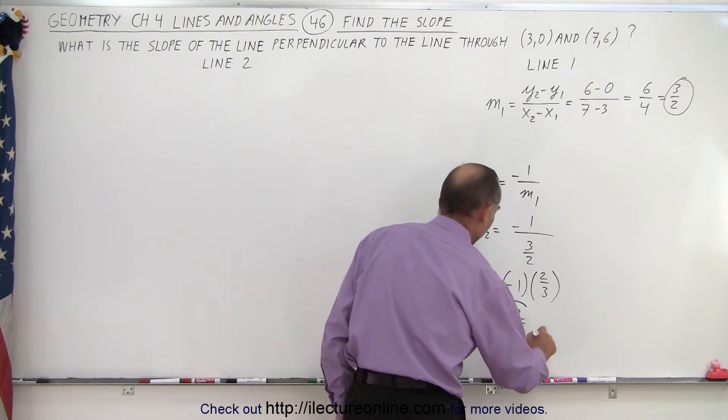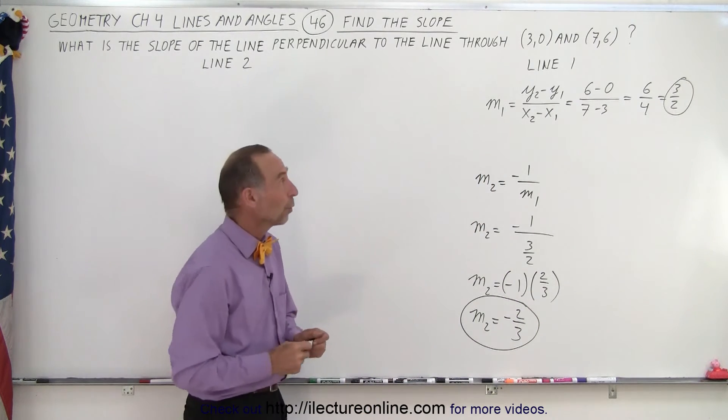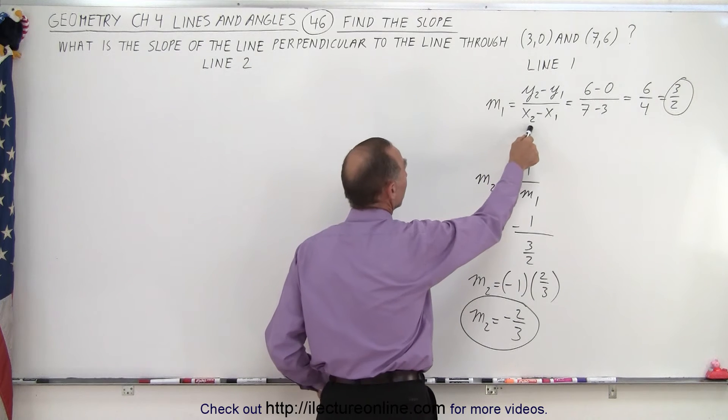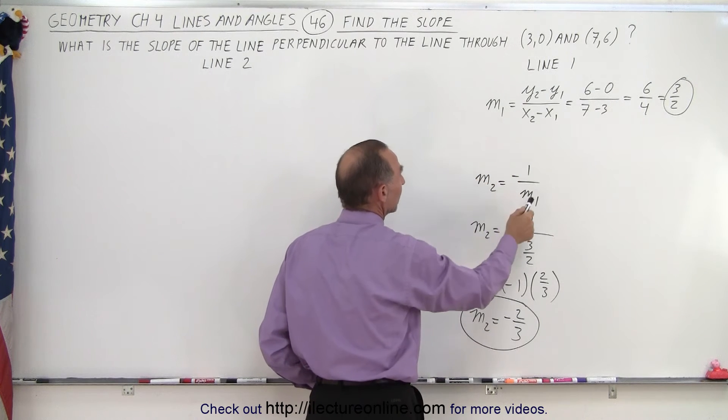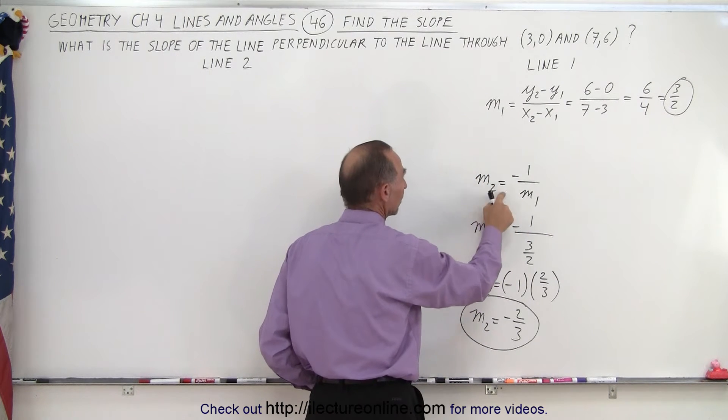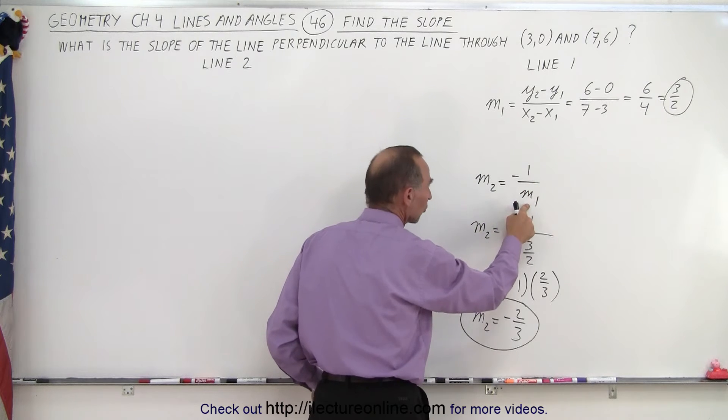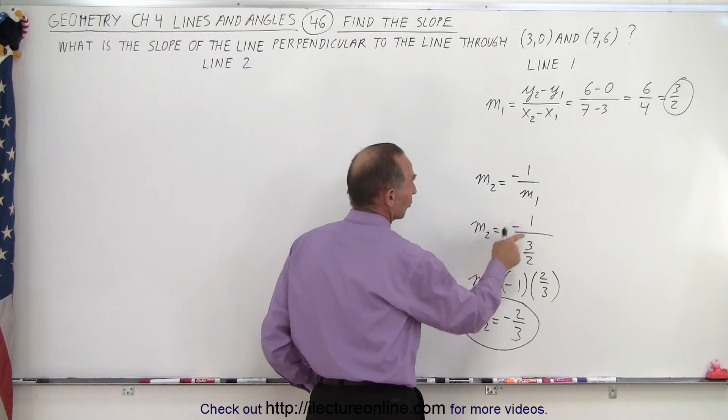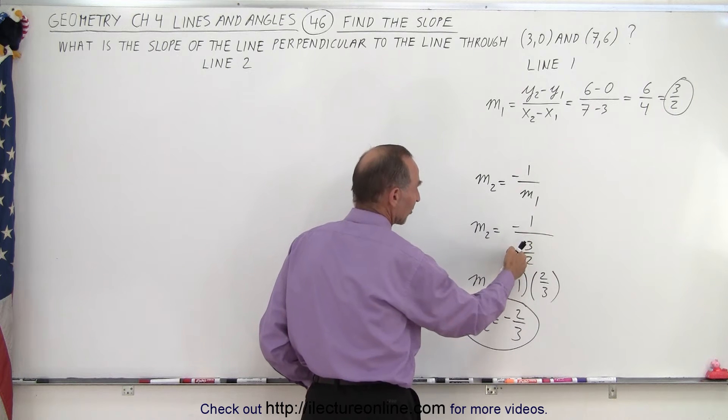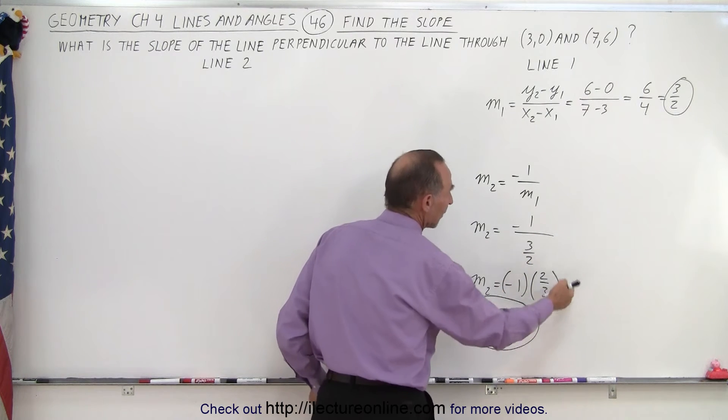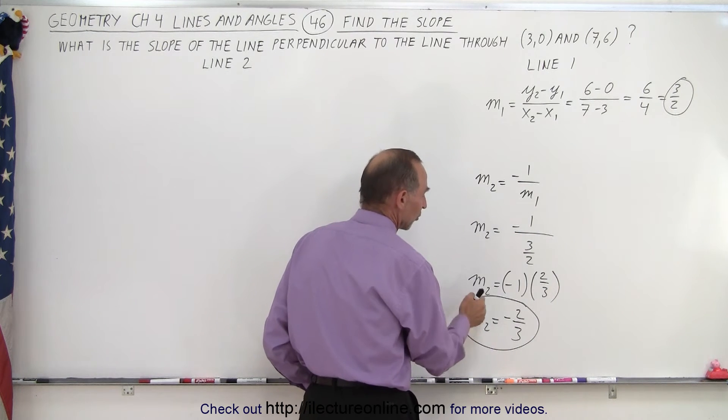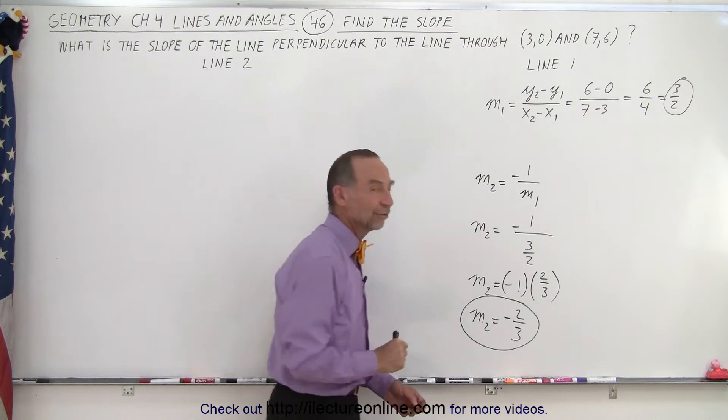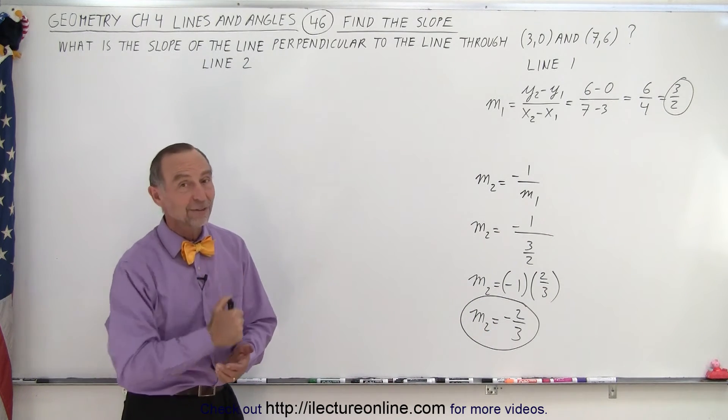Again, we find the slope of line 1. Then we realize that if the two lines are perpendicular, the slope of the second one is equal to negative 1 over the slope of the first one. The first one's slope is 3 over 2. When we divide by a fraction, that's the same as multiplying by its inverse. And so therefore the slope of the second line is negative 2 over 3. And that is how it's done.